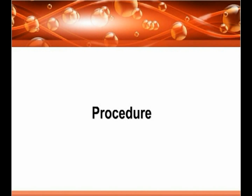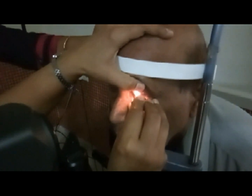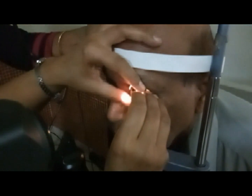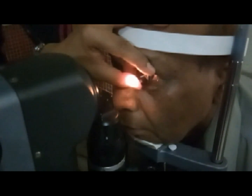After taking informed consent, under topical anesthesia with proparacaine 0.5%, the iridotomy lens is applied. The patient is asked to look straight. Iridotomy is performed in the peripheral one-third of the iris, just anterior to the arcus. The site selected is preferably the crypt of the iris, and the power used is 4 to 8 mJ depending upon the thickness of the iris.